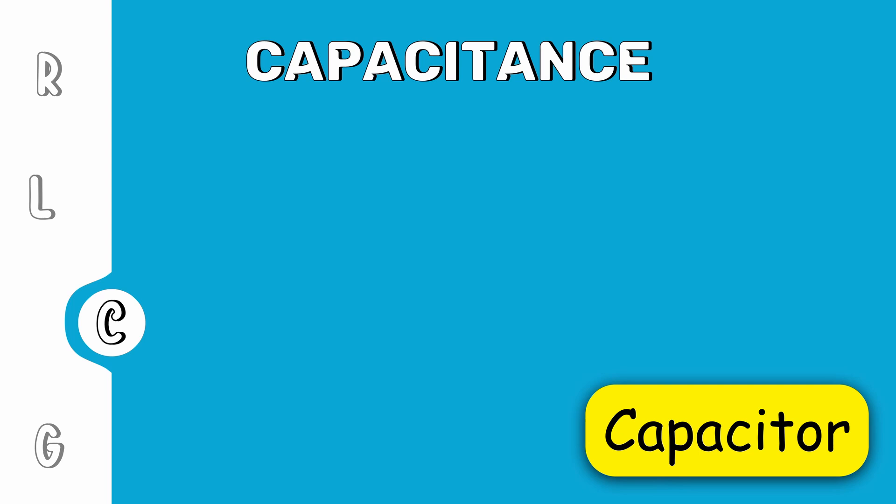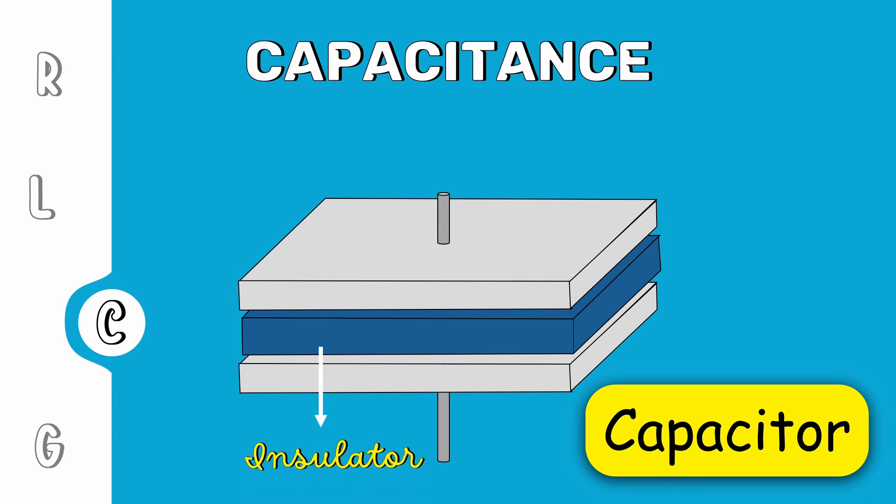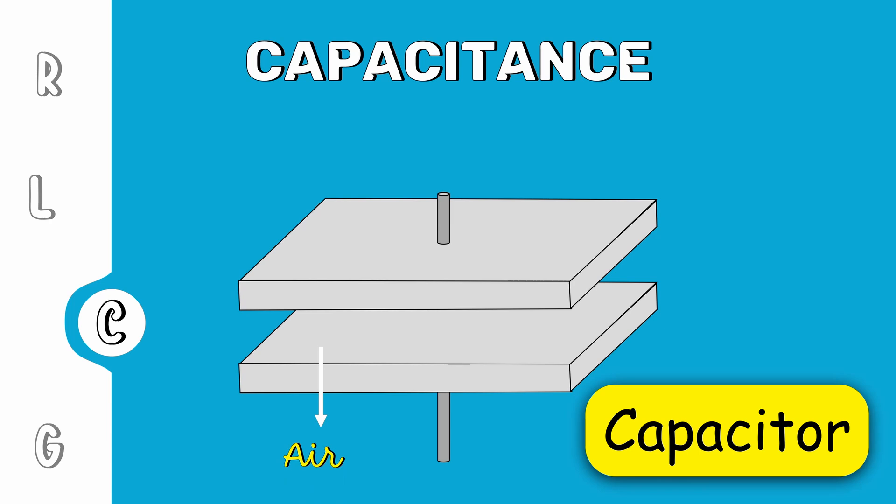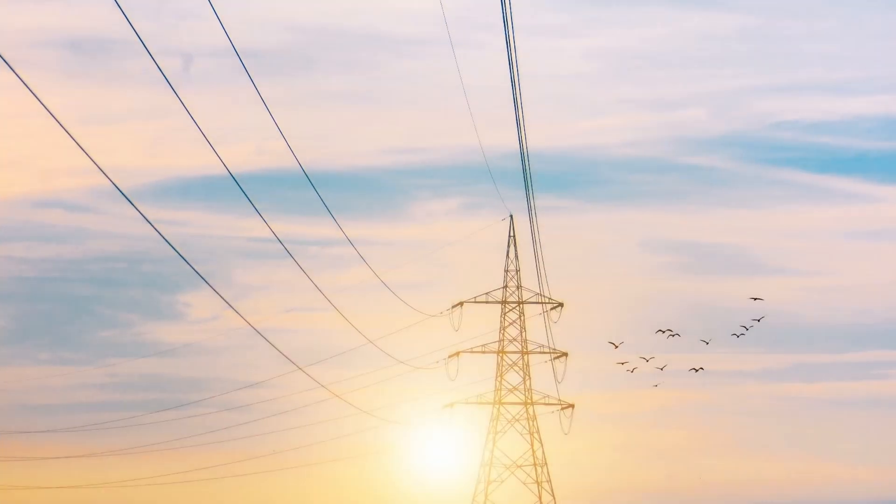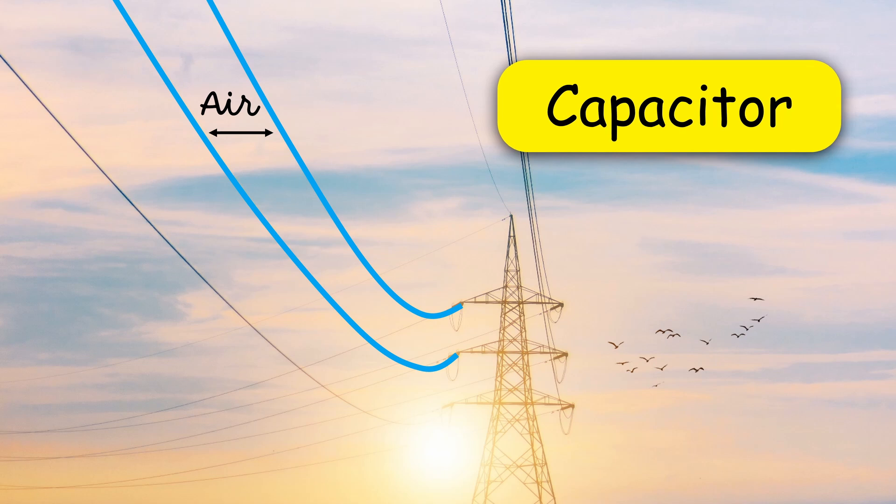A capacitor is a device consisting of two electrical conductors that are separated by a non-conducting substance. The non-conducting substance can be any insulator or even air. Coming back to our transmission lines, we have conductors separated by air. This means they act as capacitors.